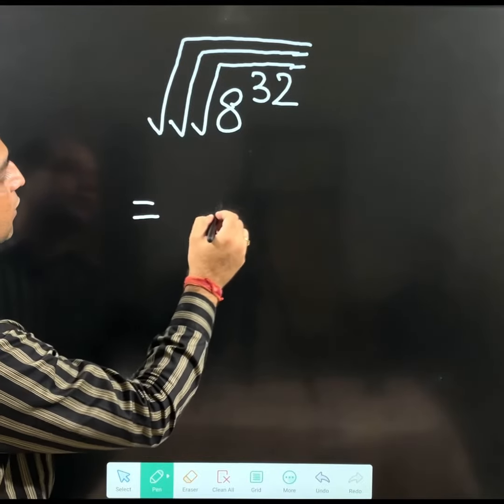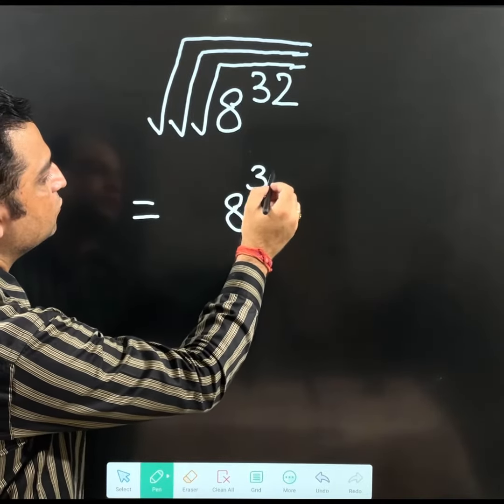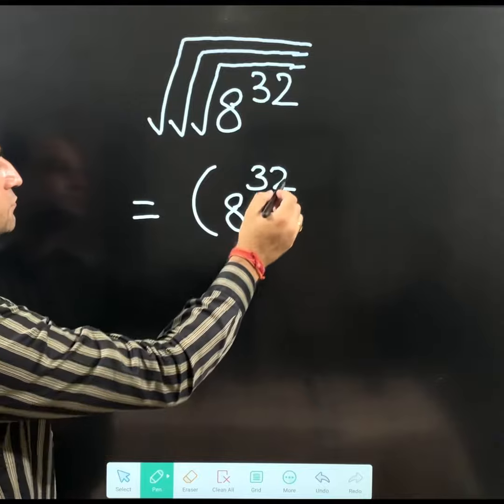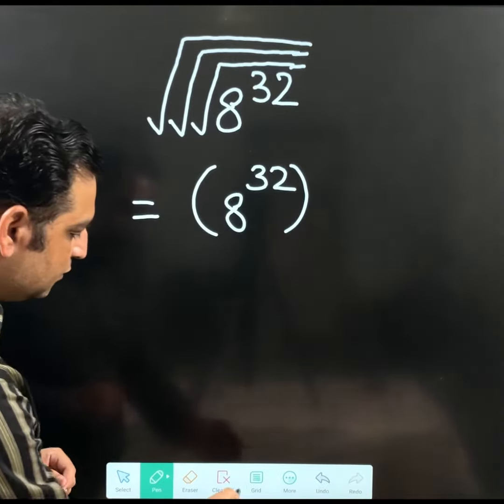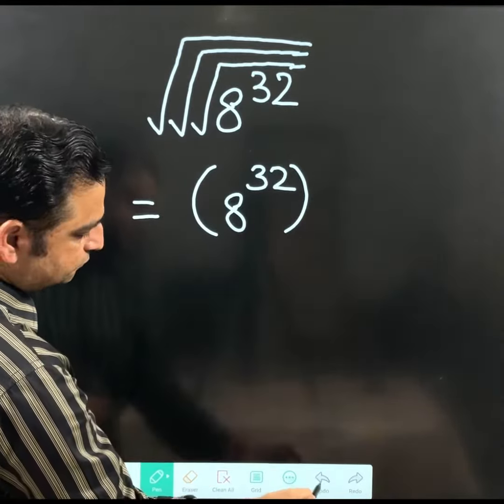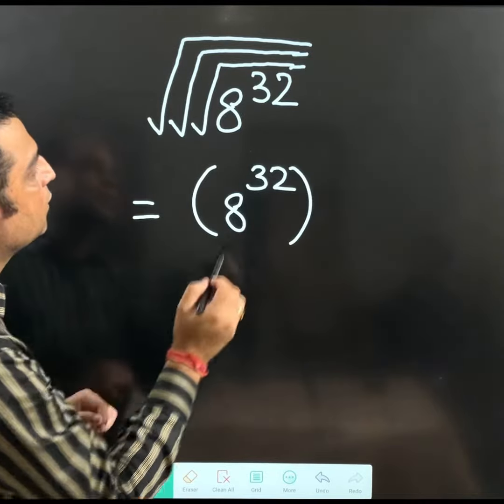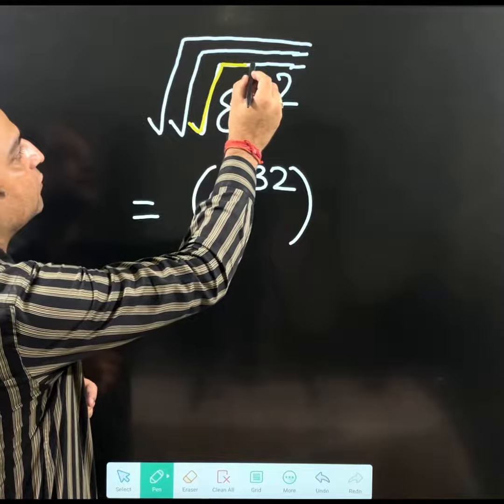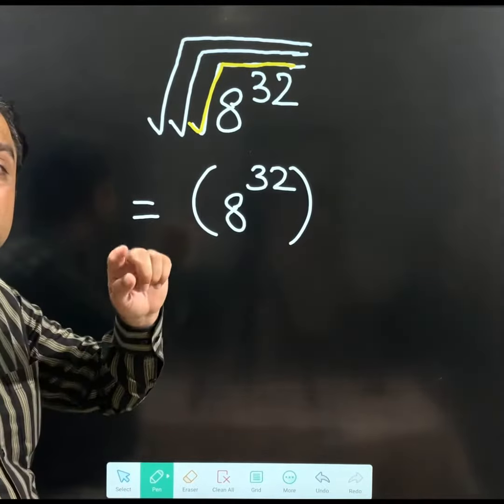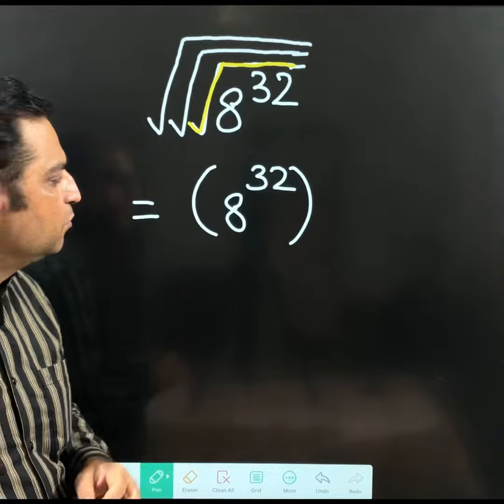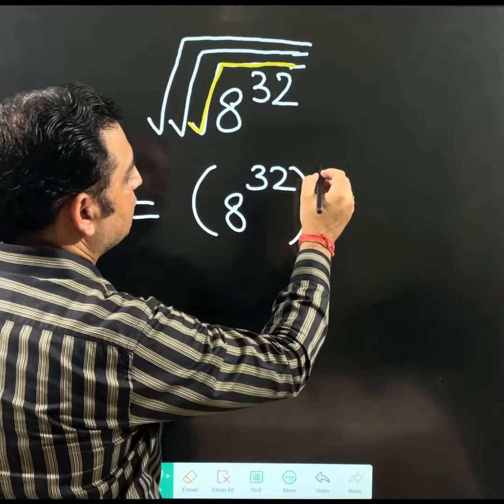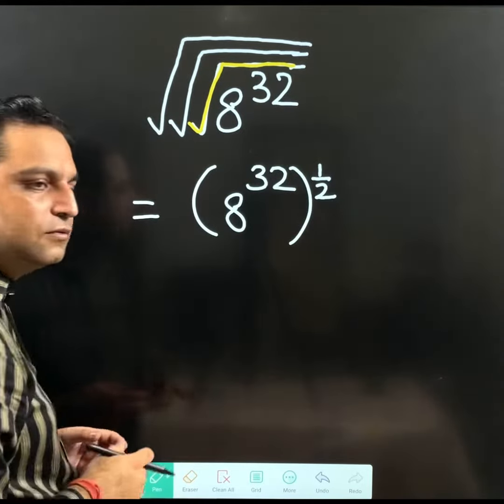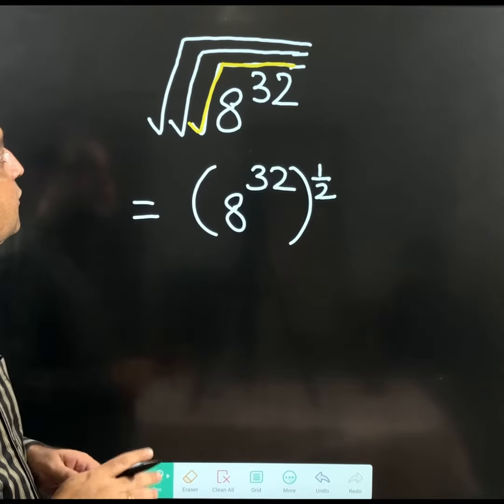We are having 8 to the power 32 inside. Check it carefully. What I am going to do. First of all, I am talking about this square root. This one. I am going to remove this square root. If I will remove this square root, I will get 1 over 2. Now, it is a turn for second square root. This one. I am going to remove this square root as well.